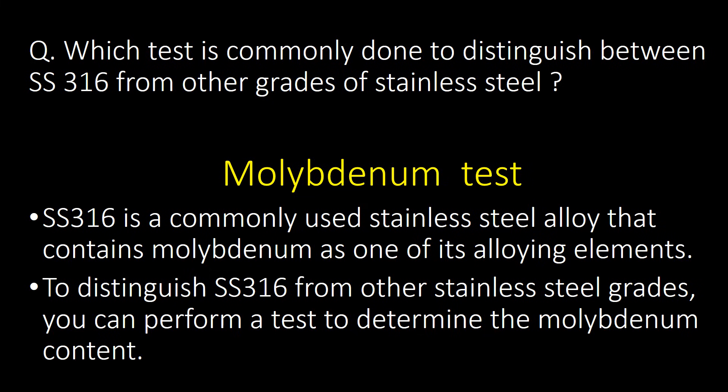Which test is commonly done to distinguish SS316 from other grades of stainless steel? SS316 is a commonly used stainless steel alloy that contains molybdenum as one of its alloying elements. To distinguish SS316 from other stainless steel grades, you can perform a test to determine the molybdenum content.